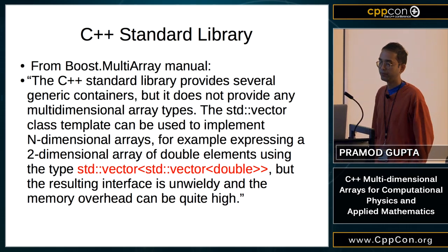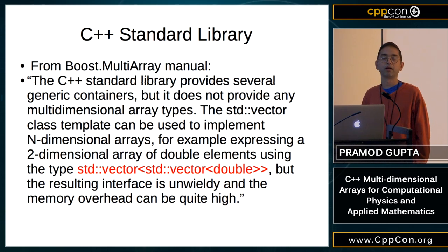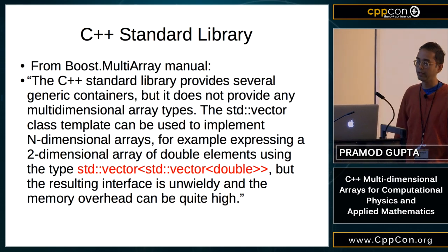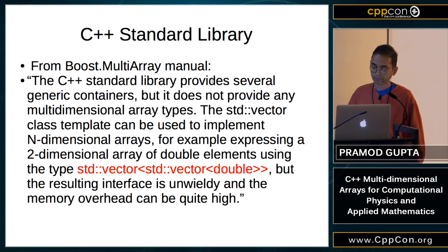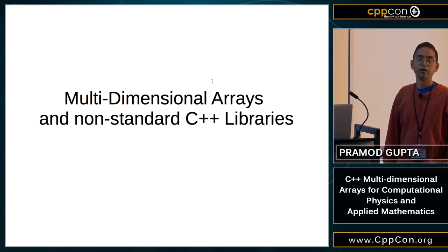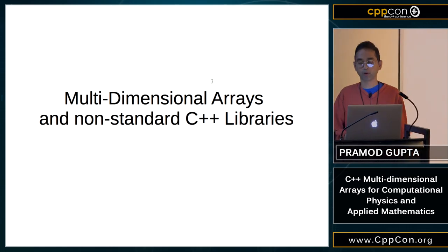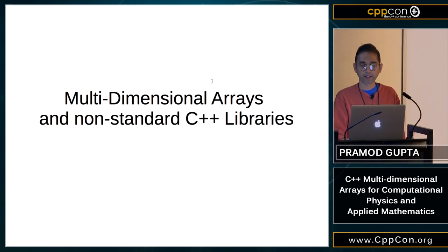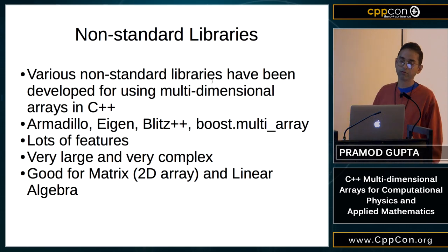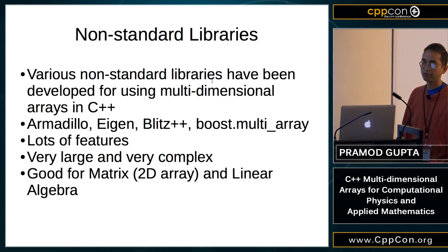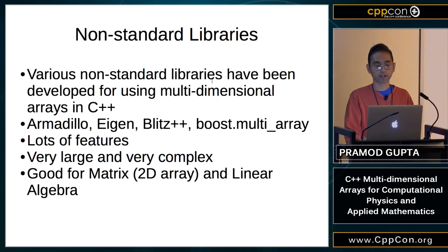As for the C++ standard library, here's a direct quote from the Boost.MultiArray manual: there are lots of generic containers in the standard library but no multi-dimensional array type. You can use std::vector<std::vector<double>>, but they themselves say the resulting interface is unwieldy and the memory overhead is quite high. Many non-standard libraries have been made to tackle this — Armadillo, Eigen, Blitz++, and Boost.MultiArray are some publicly available ones.